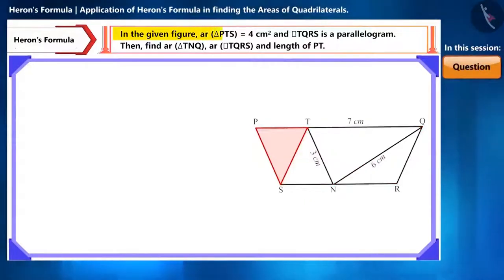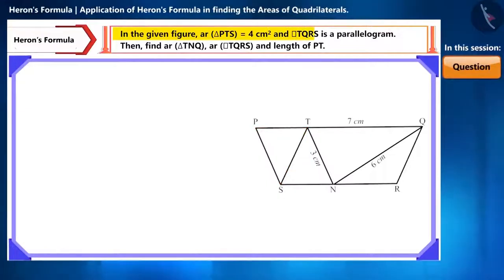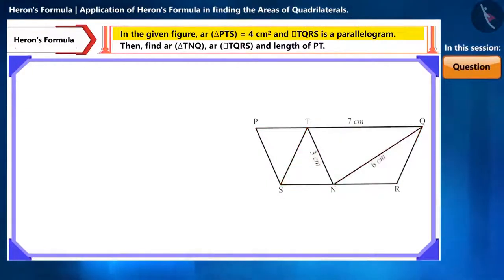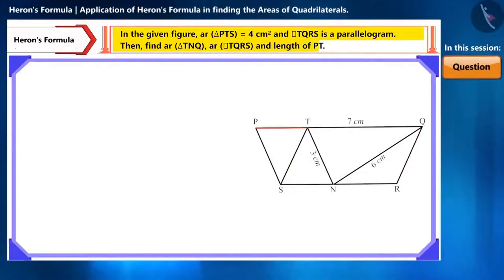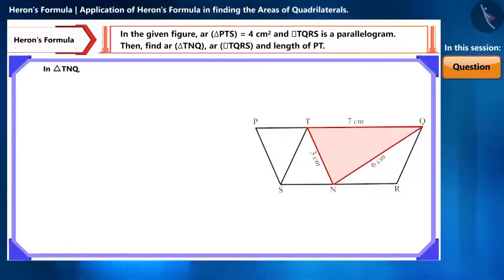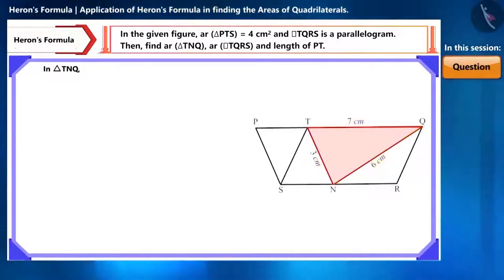In the figure, the area of triangle PTS is 4 square centimetres and quadrilateral TQRS is a parallelogram. On the basis of the given information, find the area of triangle TNQ, parallelogram TQRS and the length of side PT. In the figure, the length of all three sides of triangle TNQ is given, so by using Heron's formula here, we can easily find the area of this triangle.